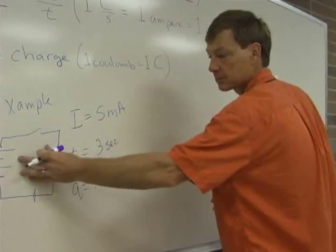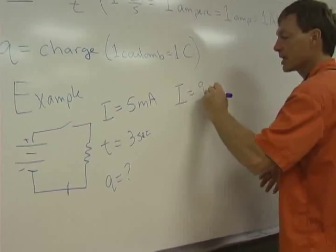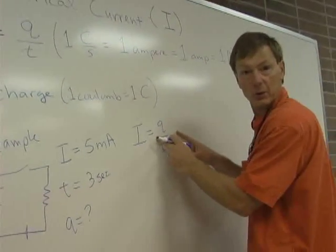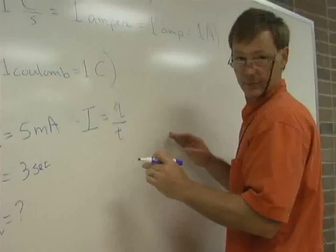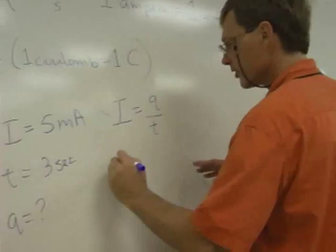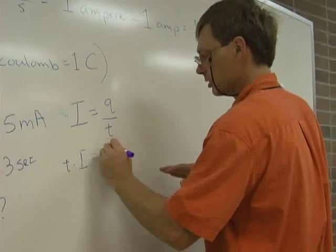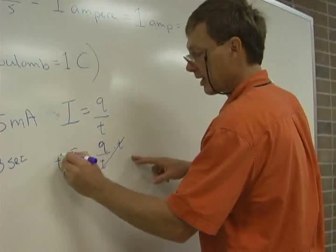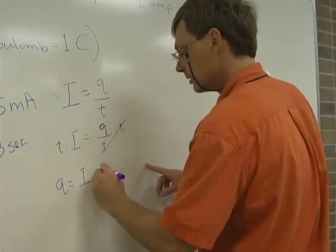OK, so I've got picture, knowns and unknowns. The equation is current is charge over time. But I don't know the charge. I know the current and the time. So I need to solve, make a working equation out of this. Multiply both sides by time. Let me write it out again. I'll just multiply both sides by time. Charge is already on top. I just got to get it by itself. So now I know charge is current times time.